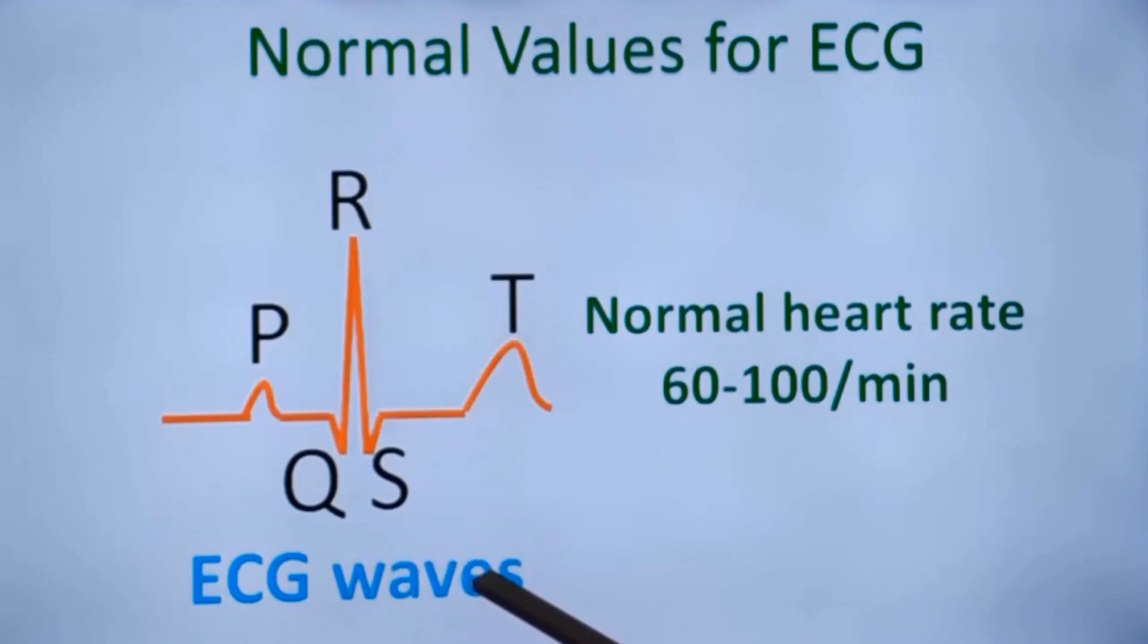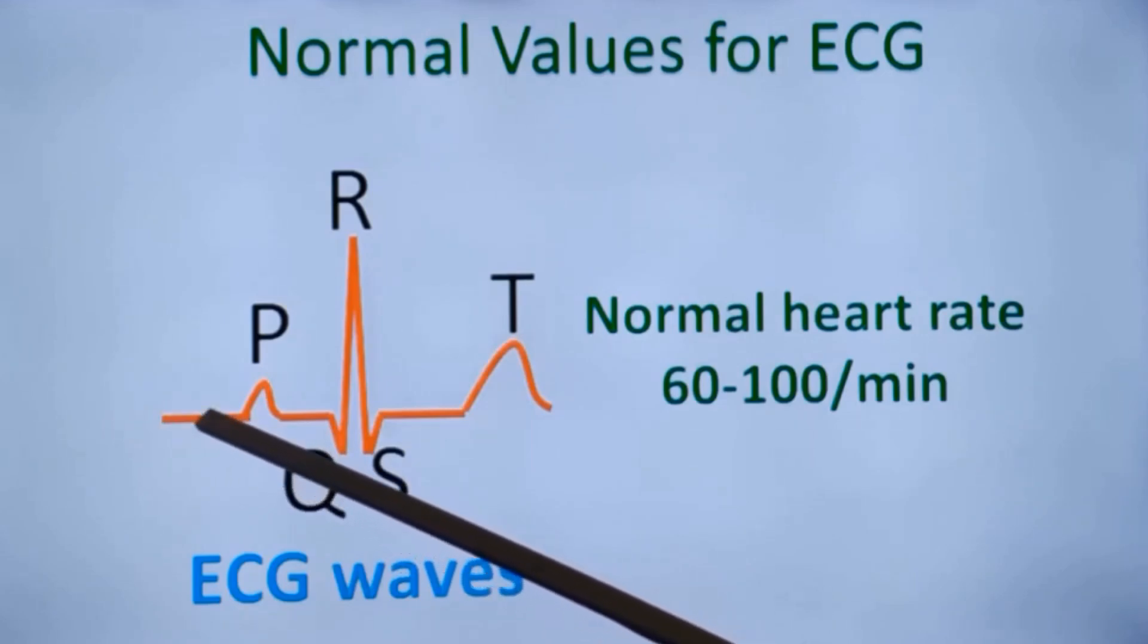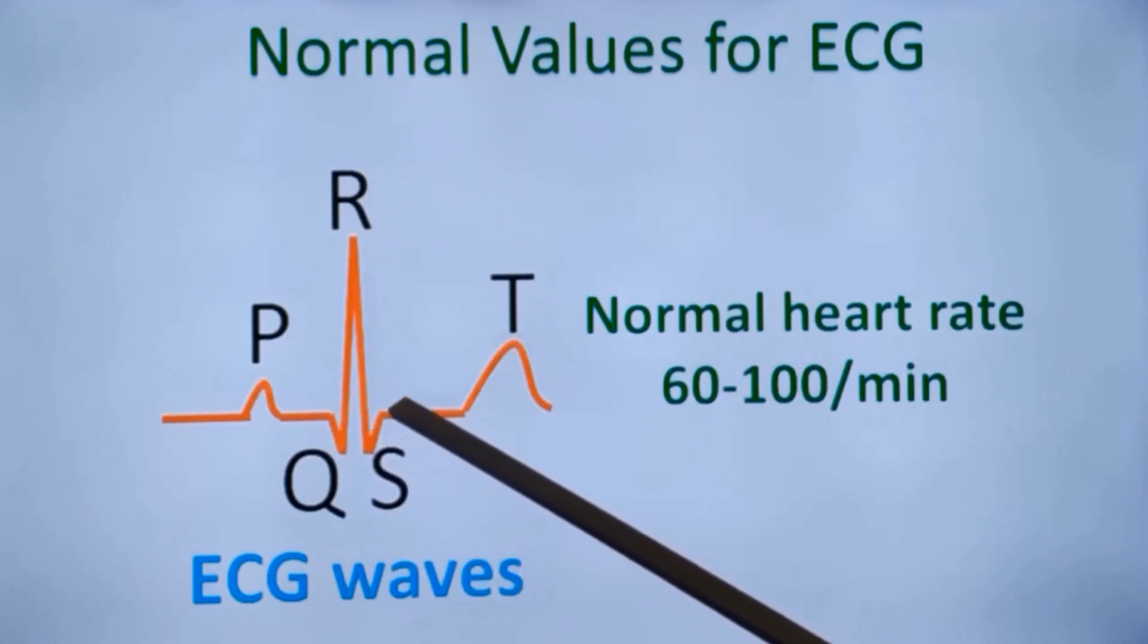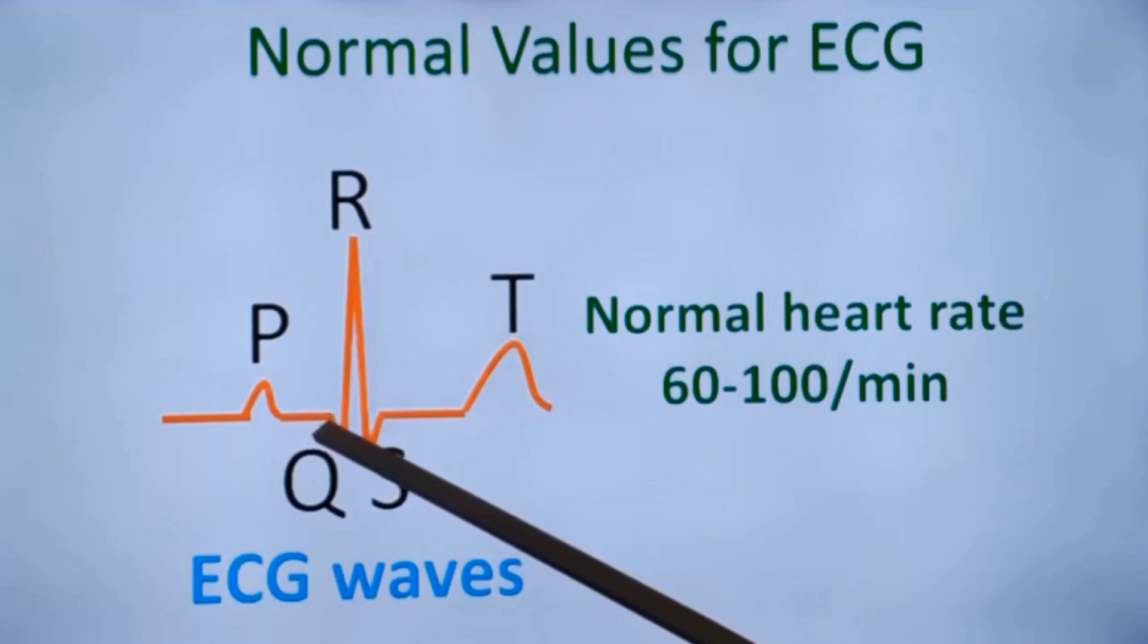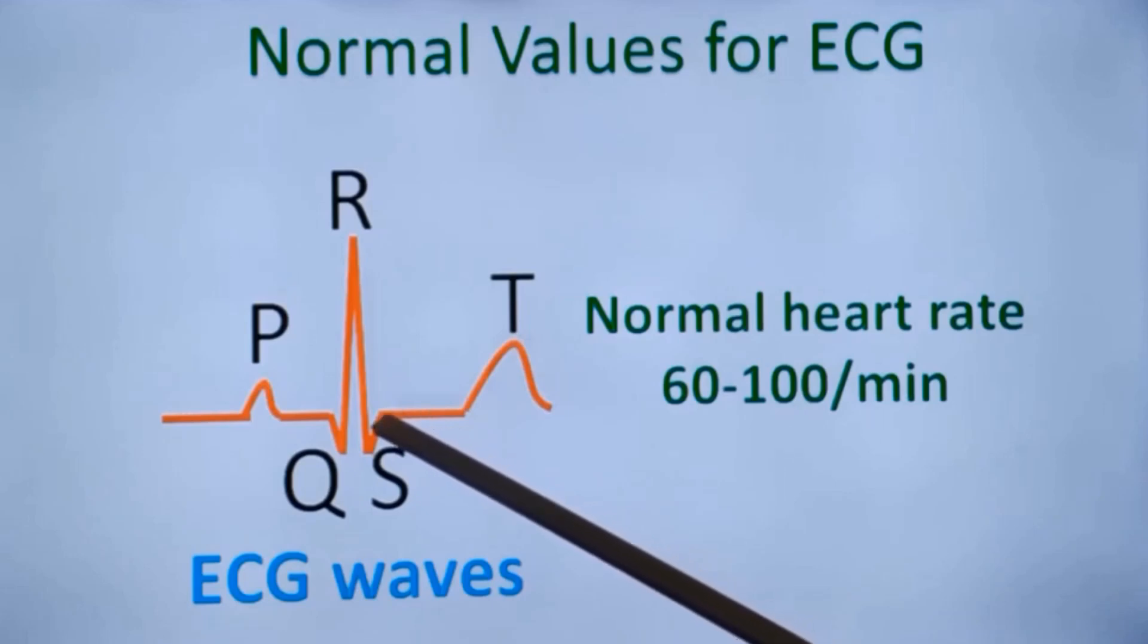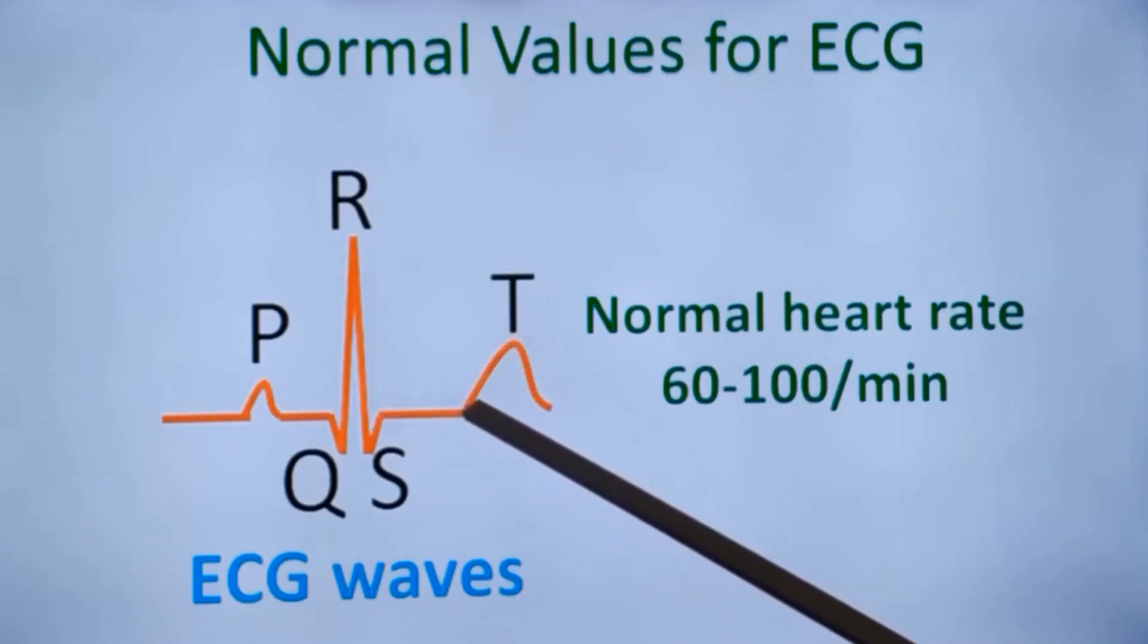And there is another one which is not represented here. Part of it is seen here. That is the TP segment. Previous T to the current P. That is the true isoelectric interval in the ECG. While PR and ST are not, even though it is shown as isoelectric in this diagram, they are not truly isoelectric. Because PR segment will contain a negative component of the TA wave. And ST segment is usually slowly upsloping so that it merges with the ascending limb of the T wave.